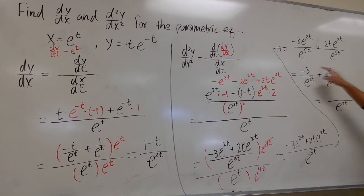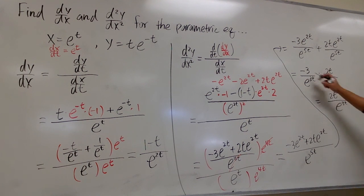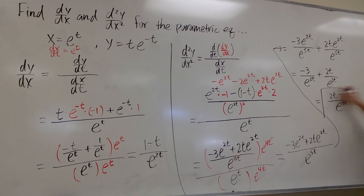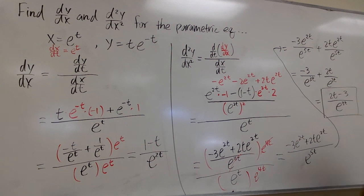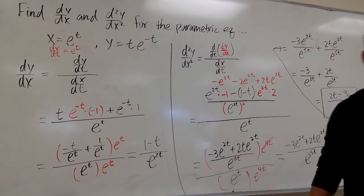Putting it all together, the second derivative is (2t minus 3) over e to the 3t. That's the final answer.